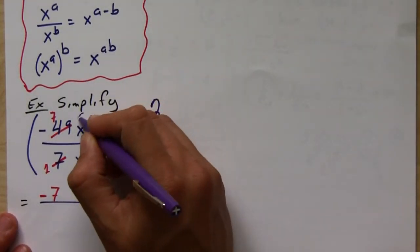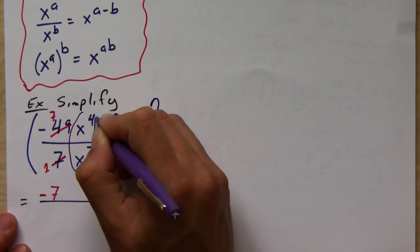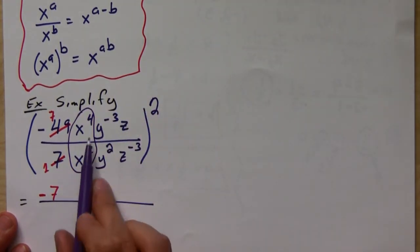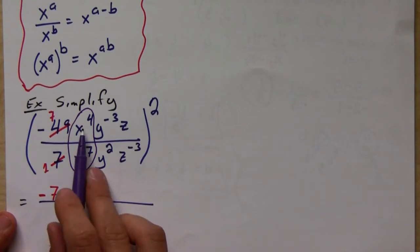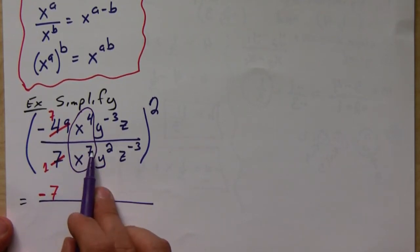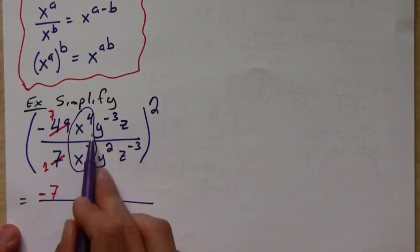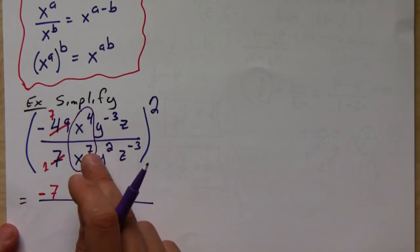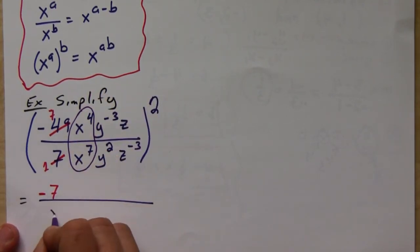Here, for example, I'm looking at these two and I go, okay, so I have x to the fourth on top, x to the seventh on bottom. So I subtract seven minus four because seven is bigger than four, so I get x to the third, and it's going to end up on bottom because seven is bigger than four.